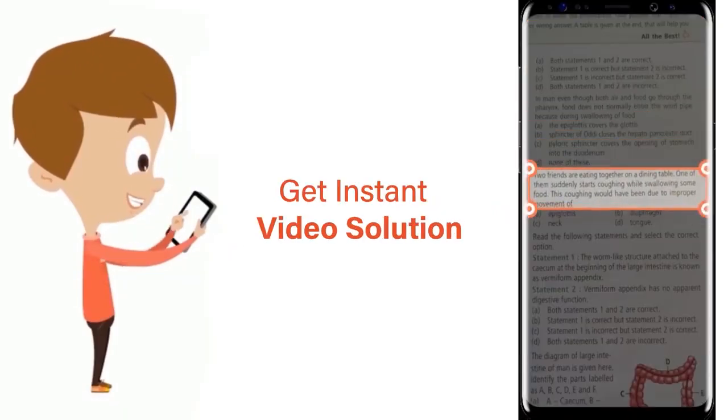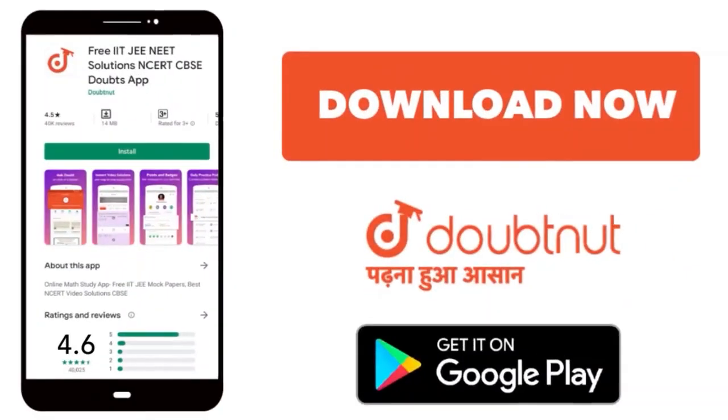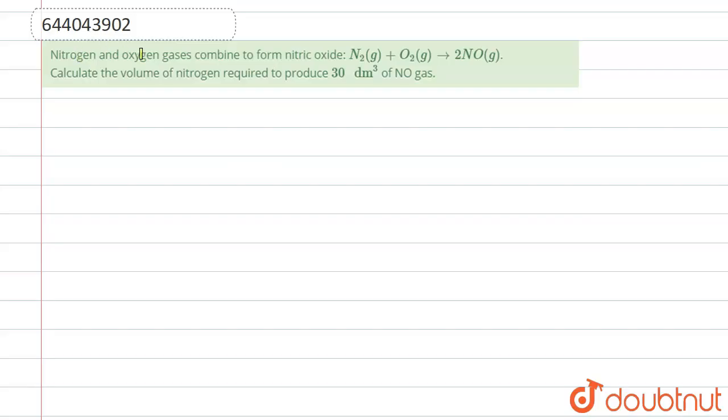Download Doubtnet app today. Hello everyone, this question is: nitrogen and oxygen gases are combined to form nitric oxide (NO). Calculate the volume of nitrogen required to produce 30 dm³ of NO gas.